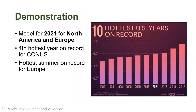I'll give a demonstration of DDRP for both North America and Europe for the year 2021. One reason I use 2021 is that it was fairly representative of recent hot years — it was the fourth hottest year on record for CONUS and had the hottest summer on record for Europe. In the Pacific Northwest, that was also the year of the horrible heat dome, where temperatures reached 110-113 degrees Fahrenheit at the Portland airport.